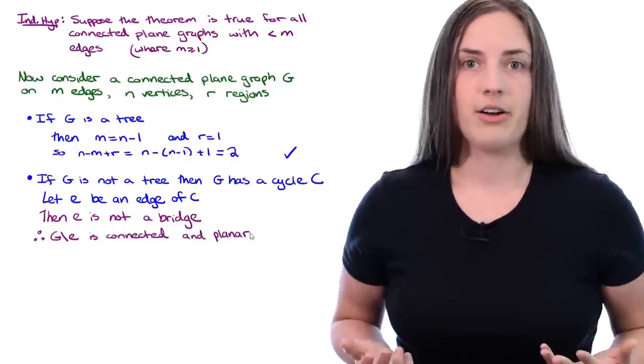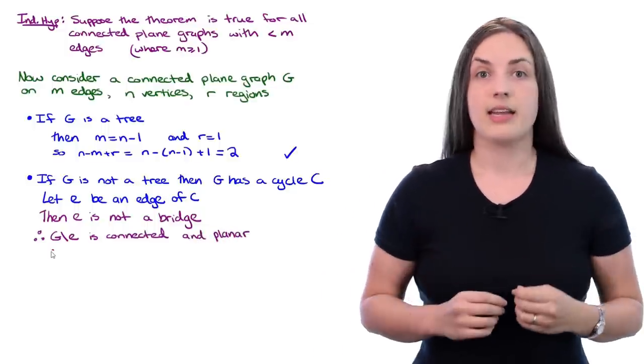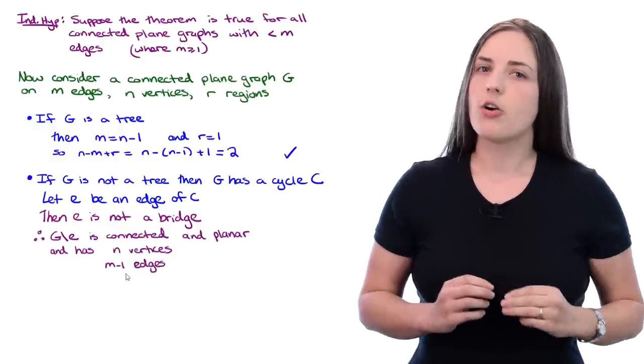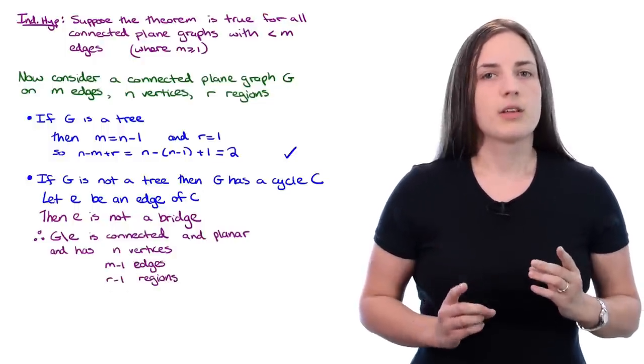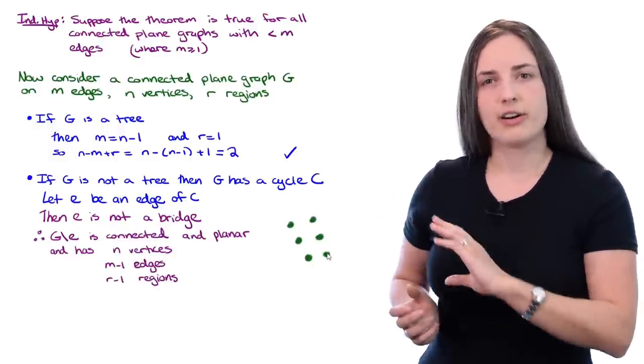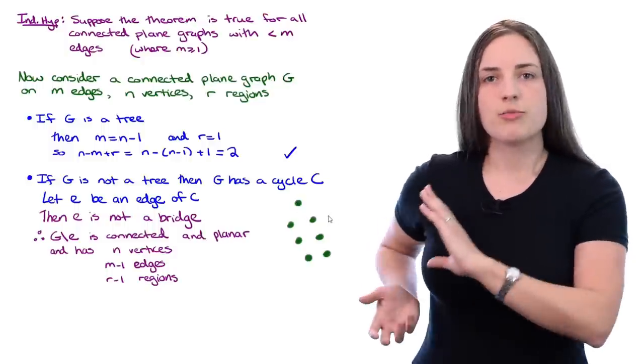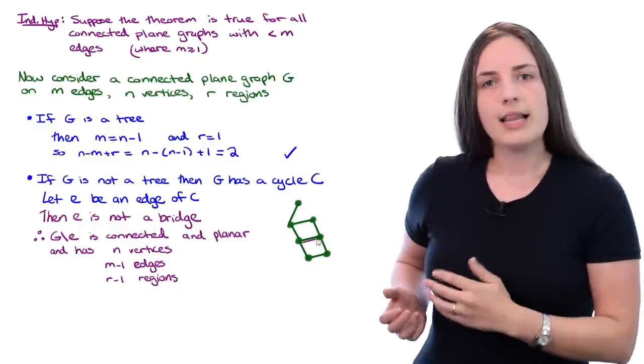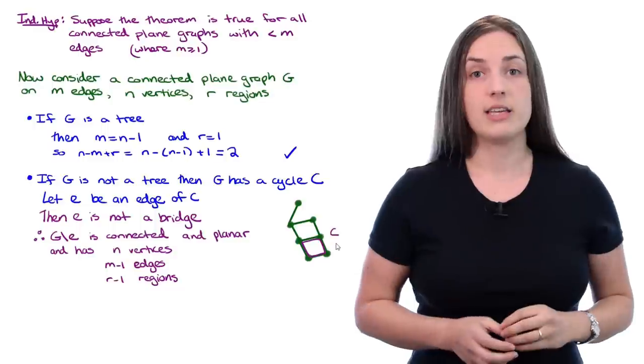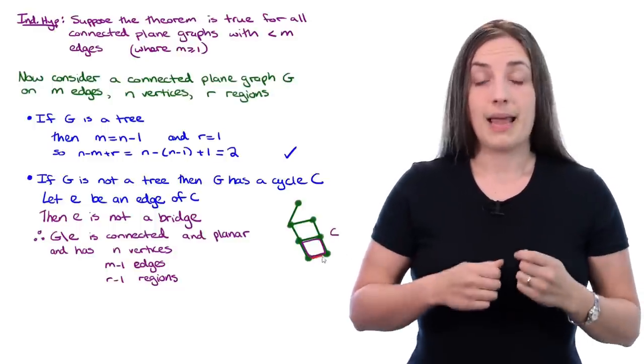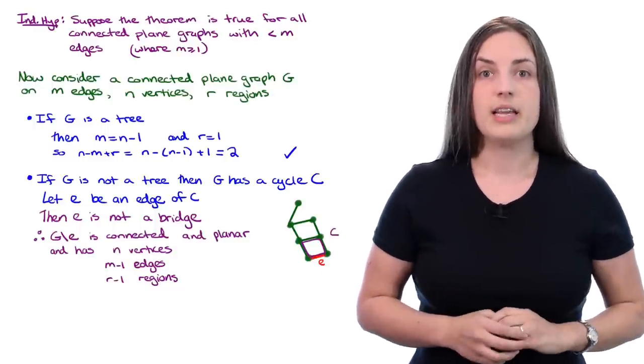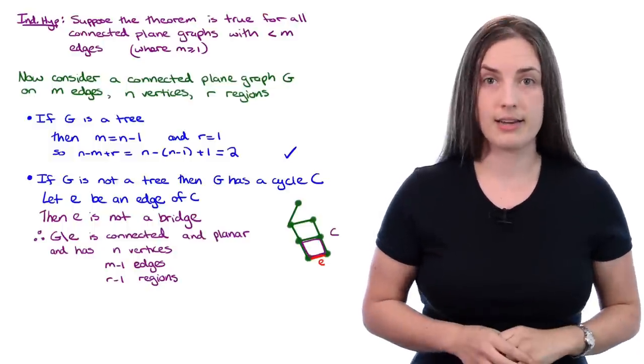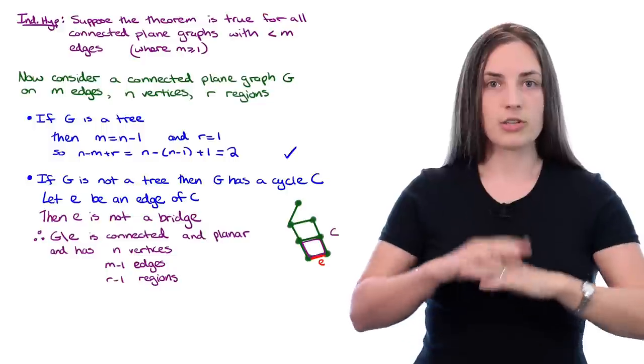Of course it's still planar as well, and it has N vertices, M minus one edges, and R minus one regions. To see why this is, let's take a look at a very small example. Here I'm drawing a plane graph which has a few cycles in it. I'll highlight a particular cycle C and some edge E, and you can clearly see that if you remove that edge, you're not going to disconnect the graph.